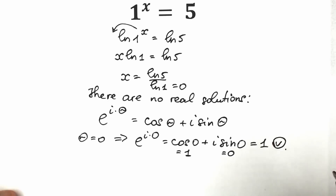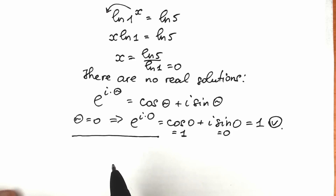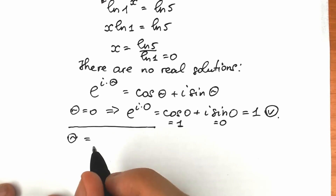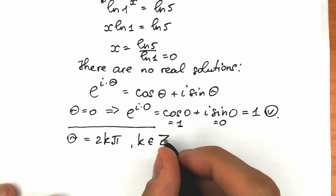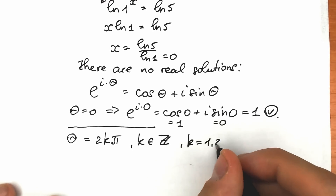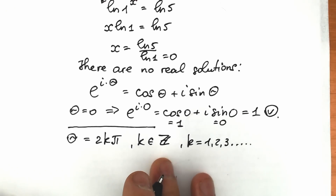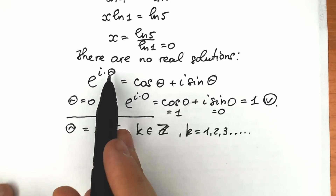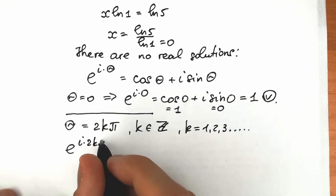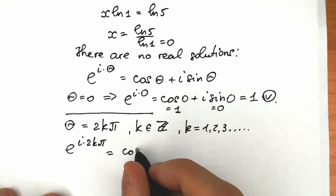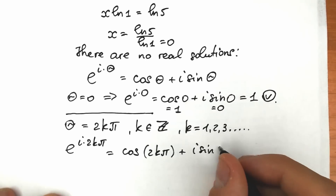Now, the key moment: we can use a substitution. Instead of theta, let's write theta equal to 2k pi, where k is an integer — so k can be 1, 2, 3, and so on. Substituting into Euler's identity, we get e to the power i times 2k pi equal to cosine 2k pi plus i sine 2k pi.